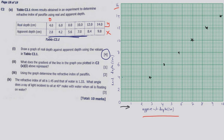Once you plot all those points, you can join them. Remember they are not starting from 0, so they start from somewhere in the middle. You draw a best-fit line nicely using a ruler, and it will be a straight line. Once you draw the graph like that using a ruler you get the full marks.